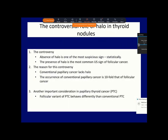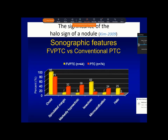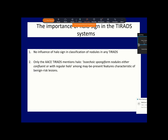There is another issue: the conventional and the follicular variant of papillary cancer behave differently. The differences are not only of statistical importance — except for non-parallel orientation, the two forms of papillary cancers have a completely different ultrasound presentation. The difference between the two forms of papillary cancer in halo sign is of a similar order of magnitude as between follicular and papillary cancers. So it is not surprising that none of the TIRADS systems involve halo sign in their classification. Only the AACE mentions a special form of nodules with halo sign among features characteristic of the benign category.